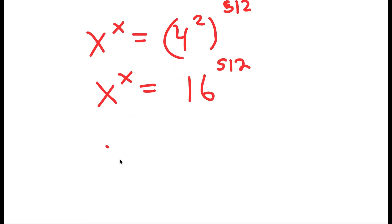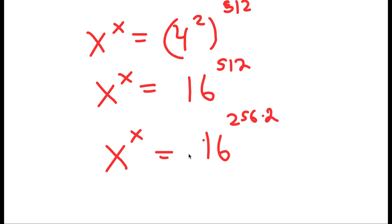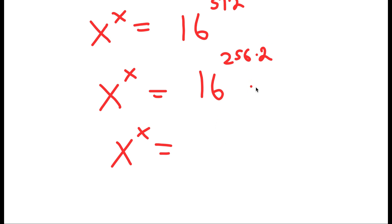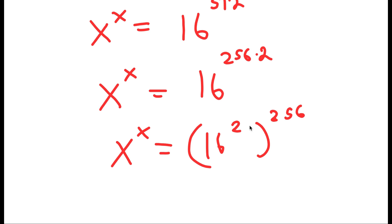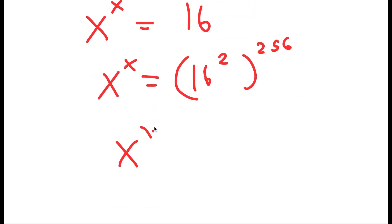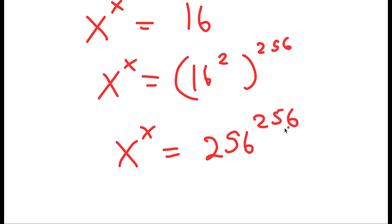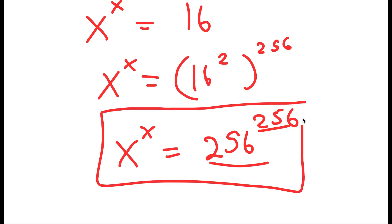I'll apply this one last time: 512 equals 256 times 2, so 16 to the power of 512 becomes 16 to the power of 2 to the power of 256. Since 16 squared is 256, this gives 256 to the power of 256. Since both the base and exponent equal x to the power of x, the solution is x equals 256.